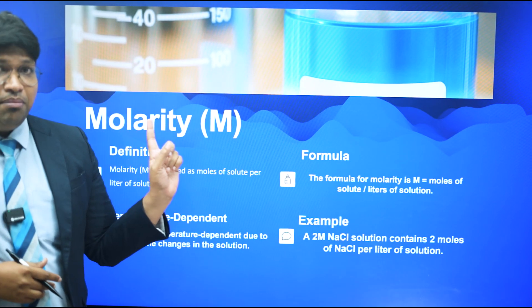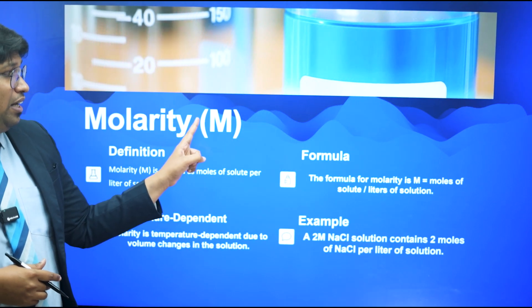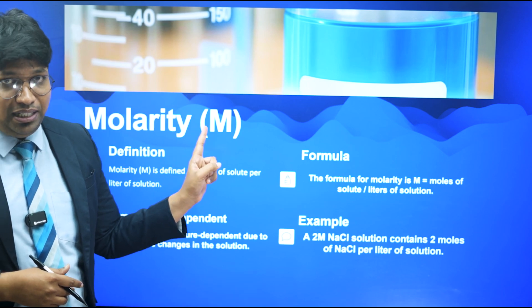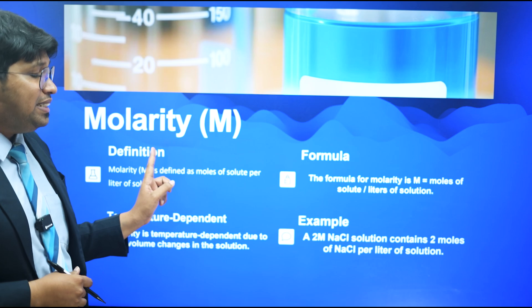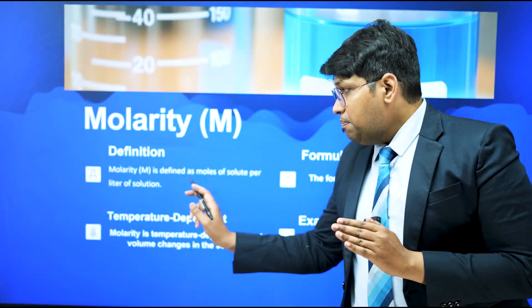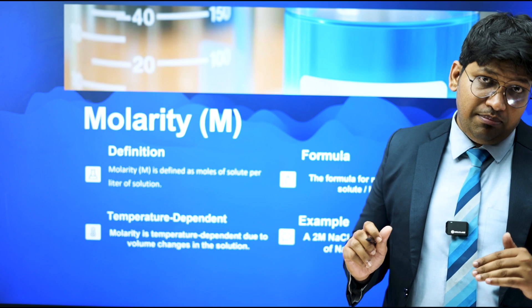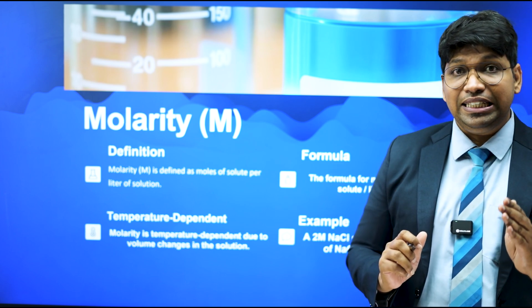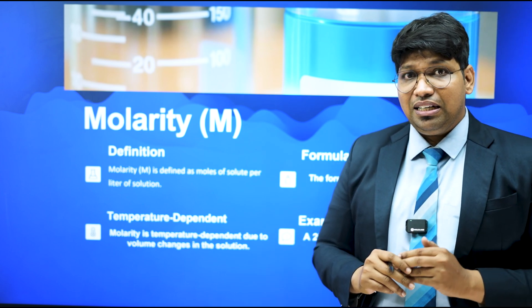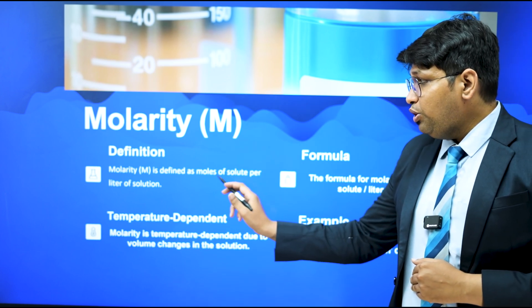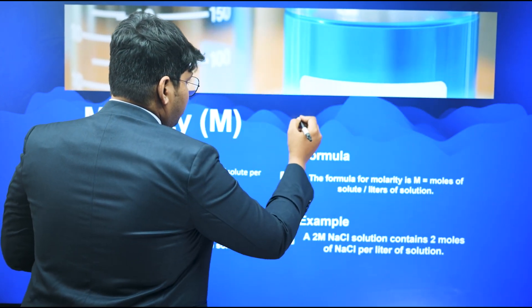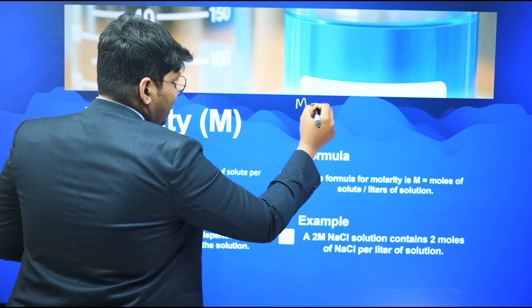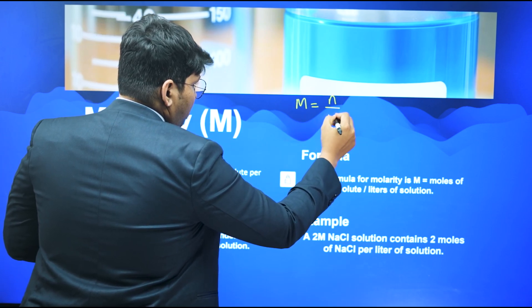The first concentration term is molarity. Molarity is always represented with a capital M. Molarity is defined as the number of moles of solute per liter of solution. The mathematical relationship is: Molarity (M) = n / V, where n is moles of solute and V is volume in liters.